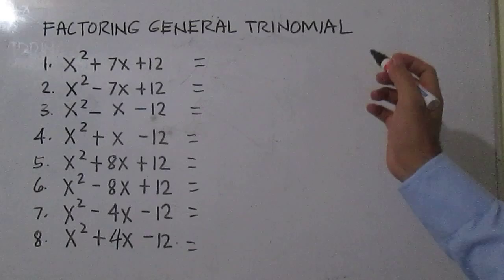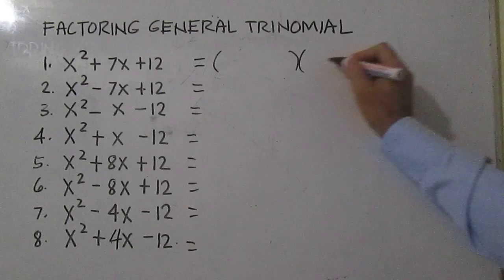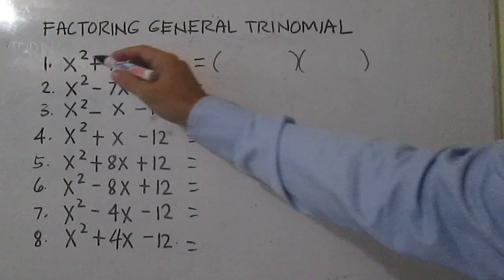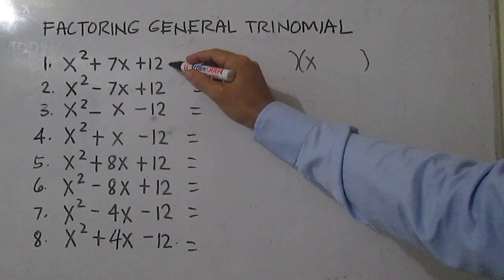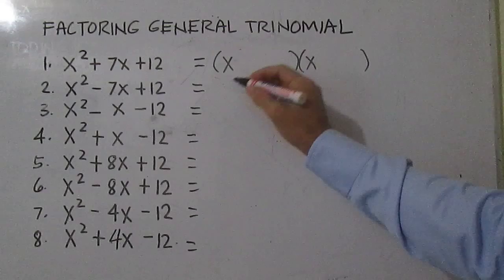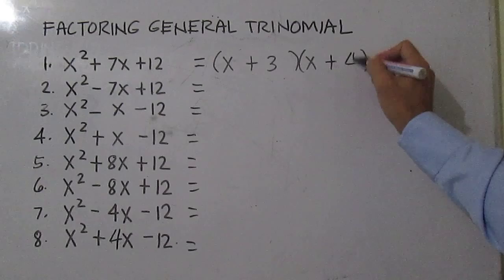Let's factor general polynomials with leading coefficient equal to one. For number one, you factor the first term and the third term. The first term is just X times X, which is X squared. Now you factor the third term — think of two numbers that give you a product of 12 and a sum of 7, so we have 3 and 4. The factors are X plus 3 and X plus 4.